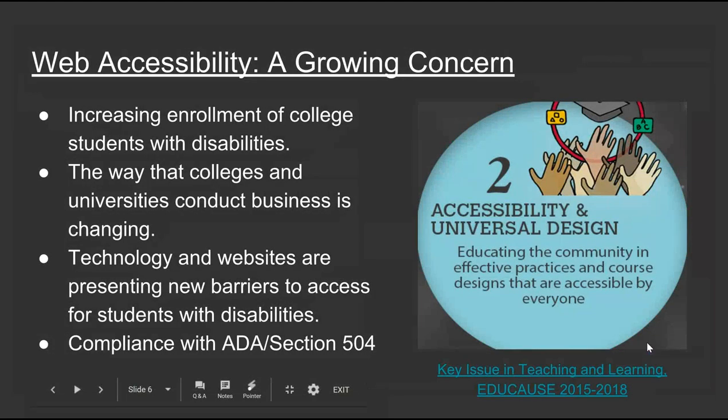We're all here because web accessibility is a growing concern. We know that our enrollments of students with disabilities are increasing. There are 11% of students in post-secondary institutions who self-identify as having a disability — and that doesn't even count students who don't disclose to our offices. The number of students with learning disabilities has tripled over the past three decades. In New York State, there are over 60,000 self-identified students with disabilities in higher education, with private colleges enrolling 44% of all post-secondary students with disabilities.